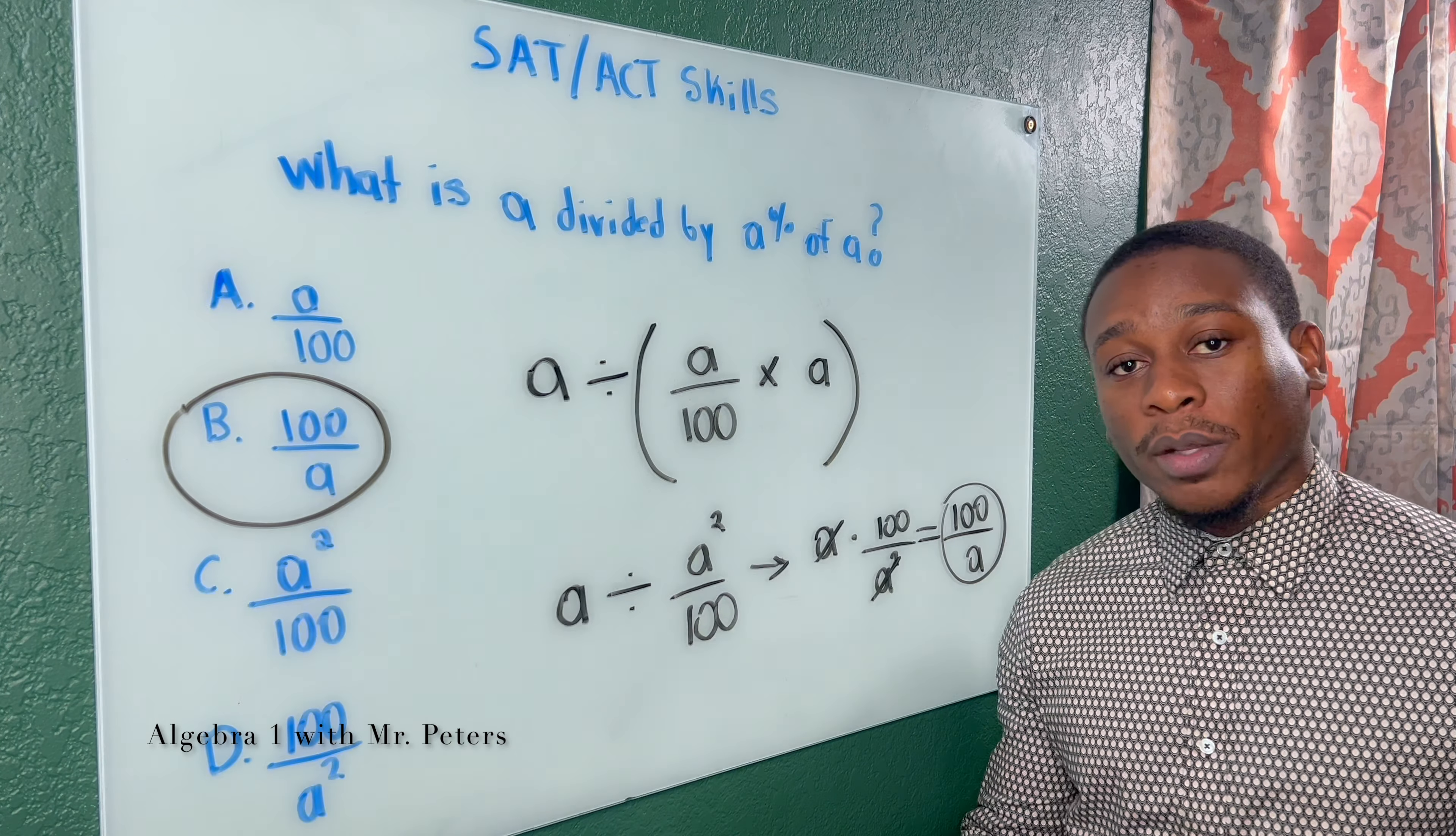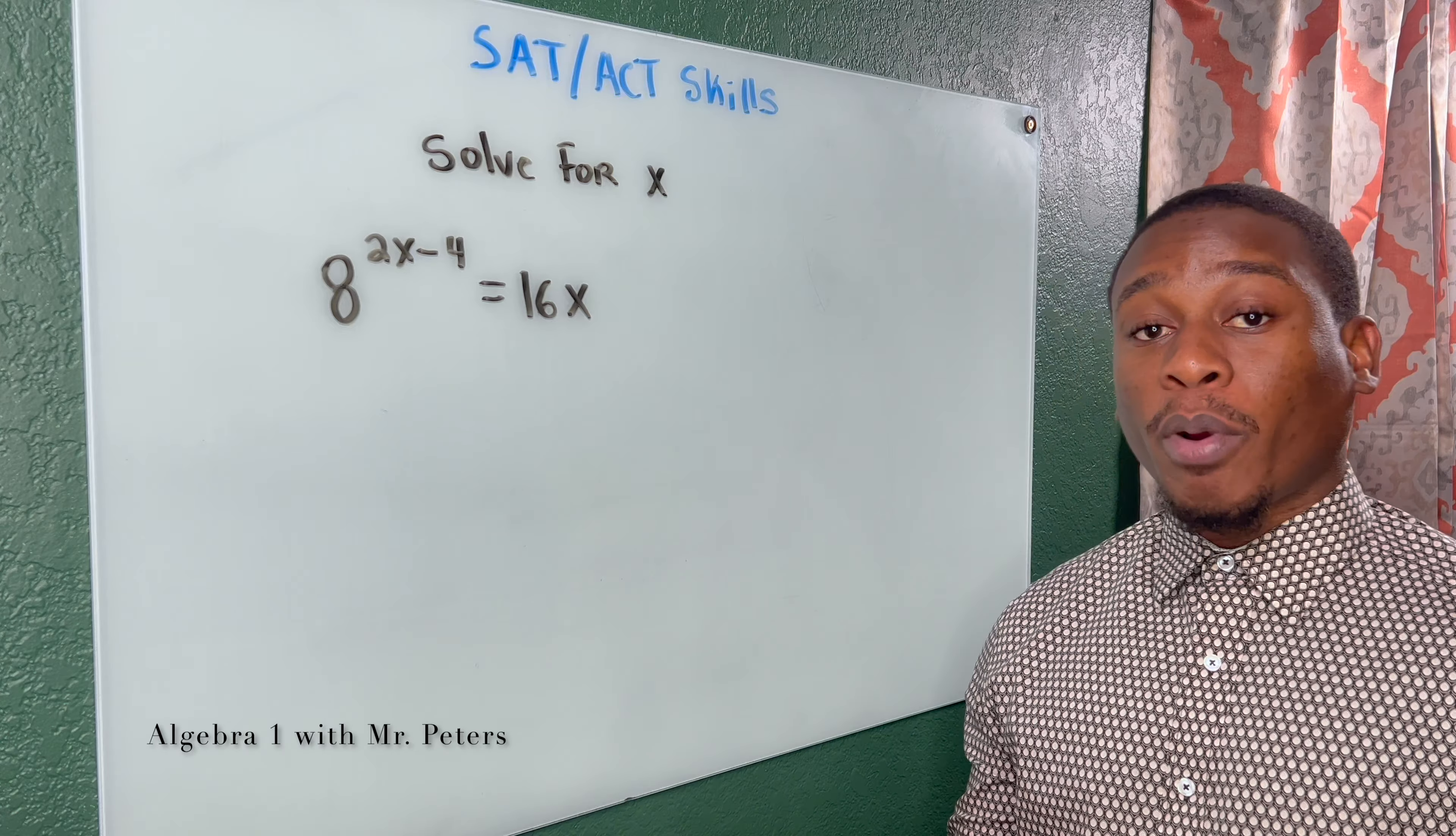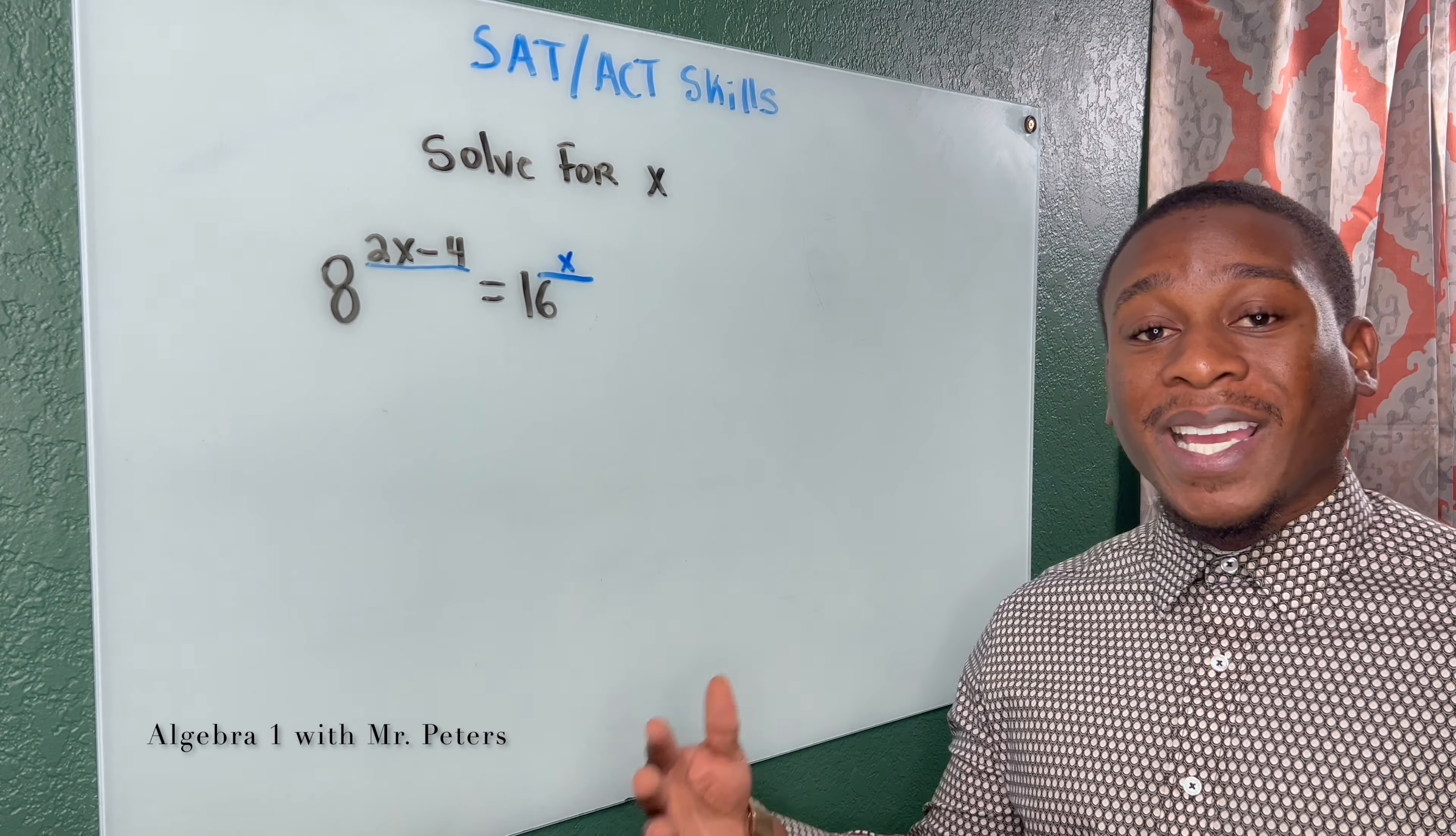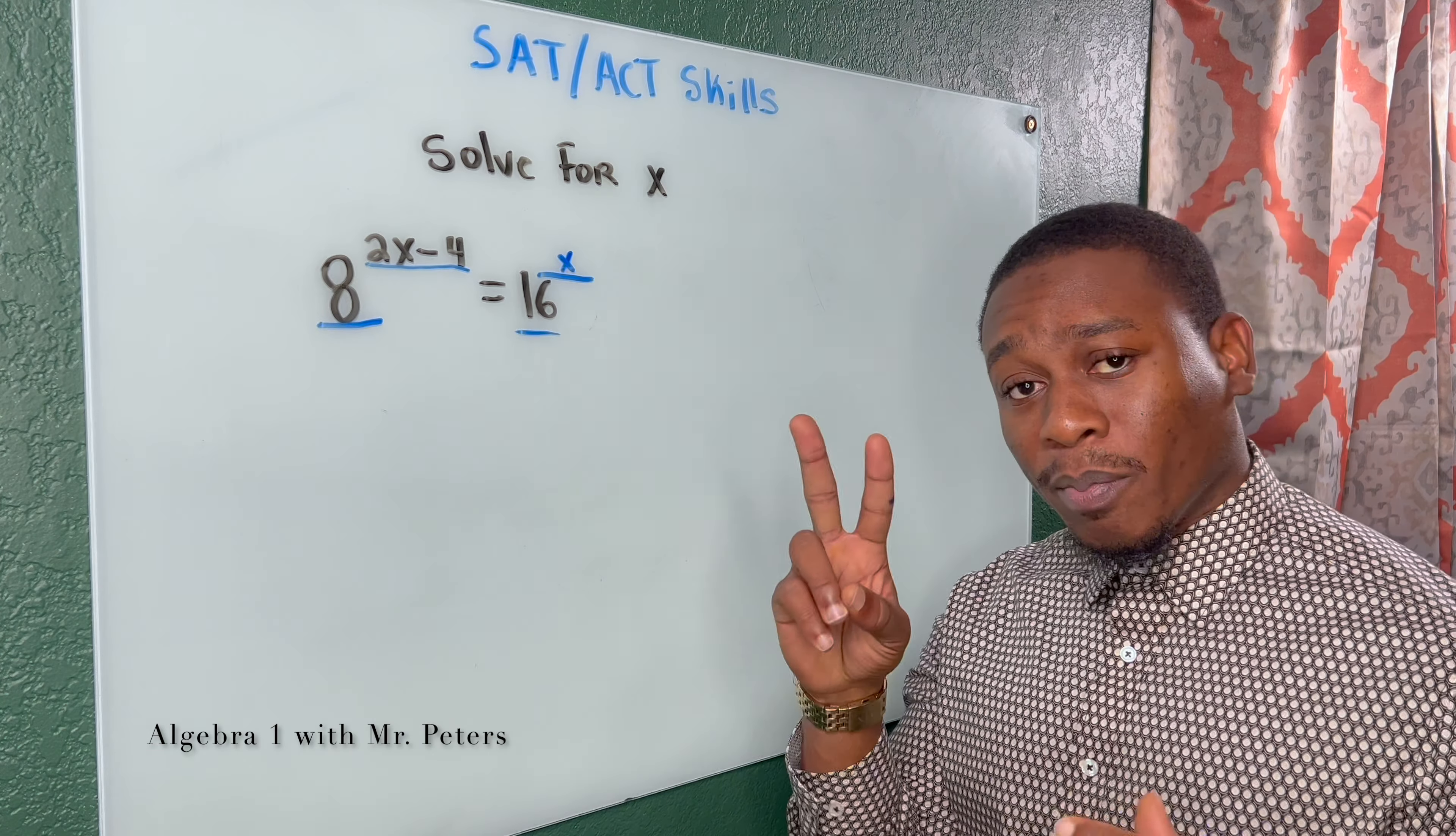And in the second problem, we're now going to look at a problem where we have exponents and variables as exponents. So in the second problem, we're dealing with exponential equations, and that means that we have variables as exponents. And what we want to do is figure out what the X value is. But before we could do that, we have to have the same base. So I'm going to rewrite both 8 and 16 so they have a base of 2.